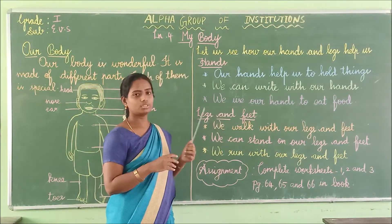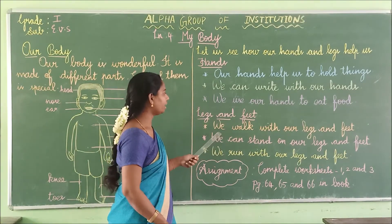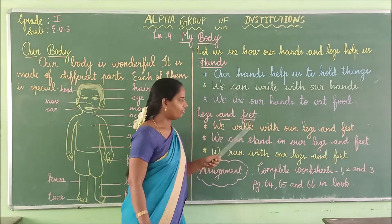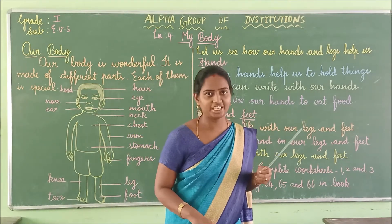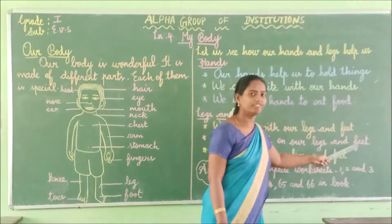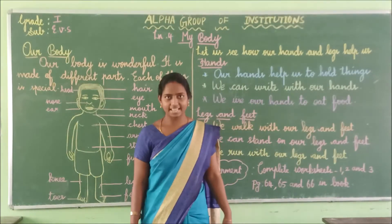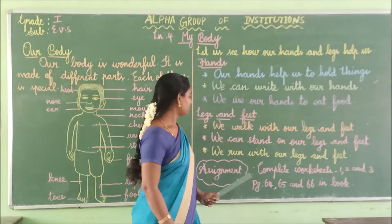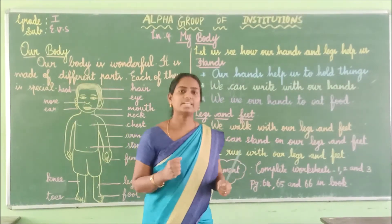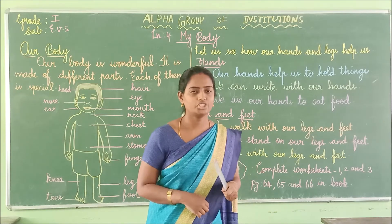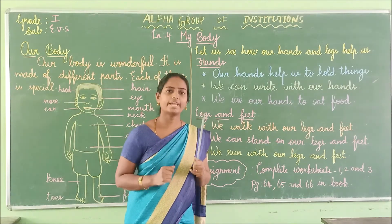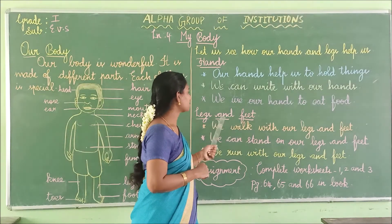And then we are going to talk about our legs and feet. We walk with our legs and feet, isn't it, children? We can dance. Then we can stand on our legs and feet. We can stand with our legs and feet, and we can run with our legs and feet. Okay, children — three things we can do using our legs and feet: we can stand, we can walk, and we can run.